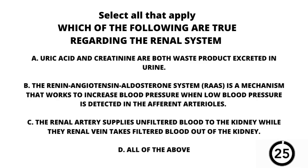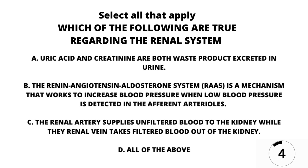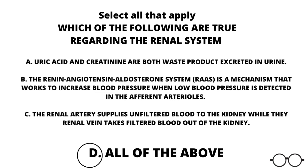Question number 16. Select all that apply. Which of the following are true regarding the renal system? A, uric acid and creatinine are both waste products excreted in urine. B, the renin-angiotensin-aldosterone system, otherwise known as RAAS, is a mechanism that works to increase blood pressure when low blood pressure is detected in the afferent arterioles. C, the renal artery supplies unfiltered blood to the kidney, while the renal vein takes filtered blood out of the kidney. Or D, all of the above. Our answer here is D — all of the above. A, B, and C are all true statements regarding the renal system.